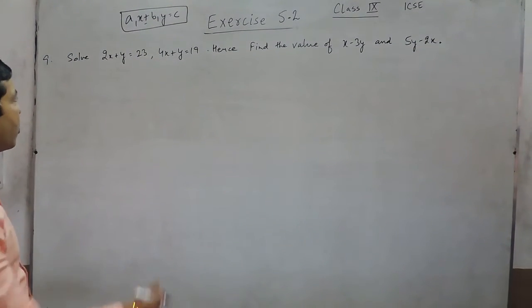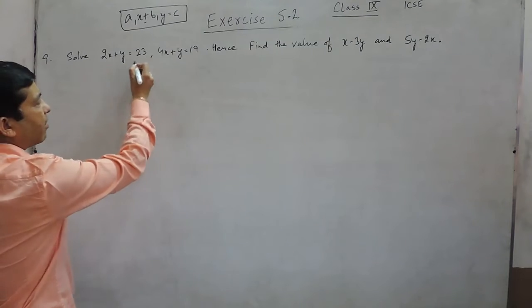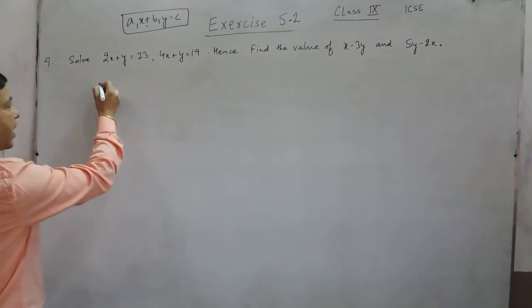Question number 9 of Exercise 5.2 is 2x plus y equals 43 and 4x plus y equals 93.